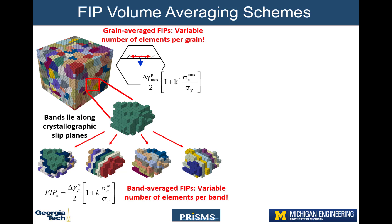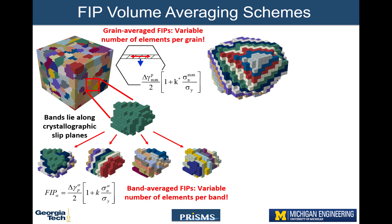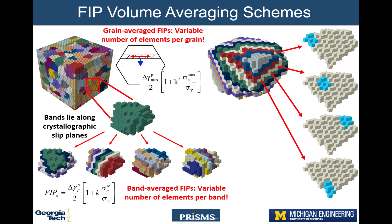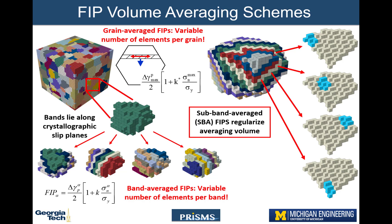However, the bands may still vary excessively in volume. For instance, bands in the center of the grain on the right are larger than the bands at the edges. A more sophisticated approach is to consider subband regions. Prisms Fatigue users select the number of elements in each subband; in this demonstration, subbands consist of 8 elements. This mitigates mesh sensitivity and provides a consistent FIP averaging volume for the most appropriate comparison of FIPs from different microstructures. Subband averaged FIPs are the focus of this framework, but users may average FIPs over any one of the three volumes described.